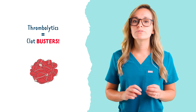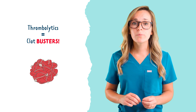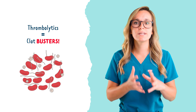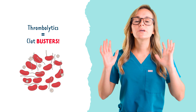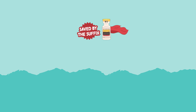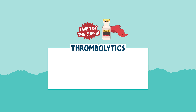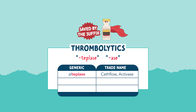Once we've given some immediate care, we look to the next step. Thrombolytics, also known as clot busters, help to break up that occlusion and restore blood flow. Thrombolytics are easy to remember because they end in the suffix -teplase or -ase. Some examples are alteplase, reteplase, and streptokinase. These drugs are busting those clots — they work to break them down and help oxygen and blood feed the heart again.